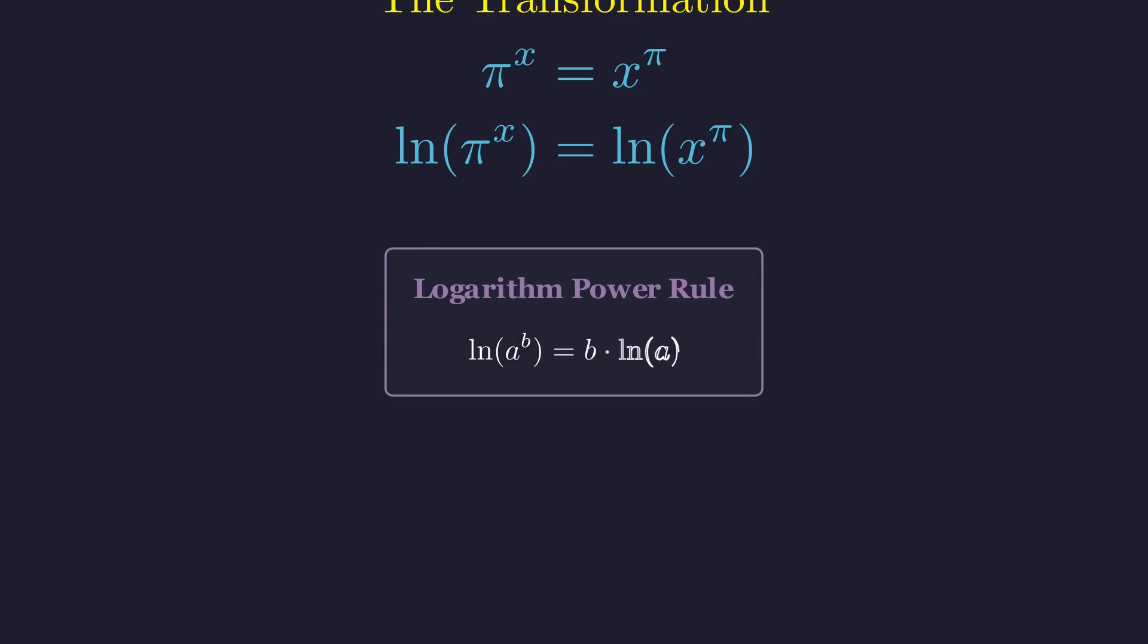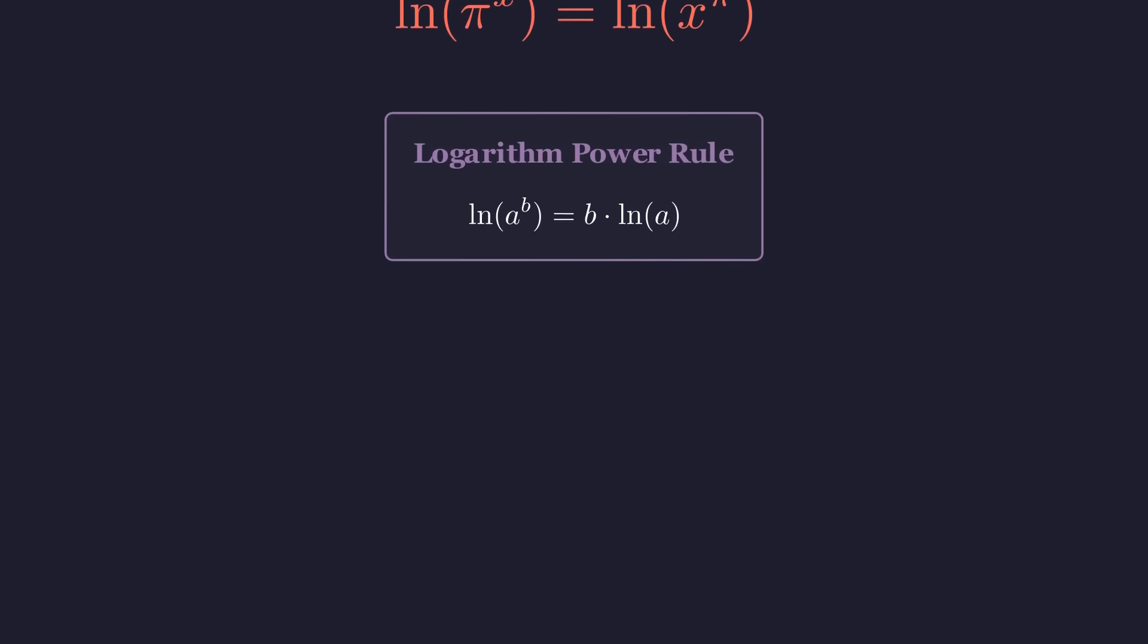Now here's where the magic happens. There's this beautiful property of logarithms called the power rule. It says that the log of a to the b equals b times the log of a. This lets us pull those exponents down in front as multipliers. Let's apply this rule. The x from the exponent comes down on the left and the pi comes down on the right. And just like that, we've transformed our equation into something much more manageable. All the variables are now out of the exponents.